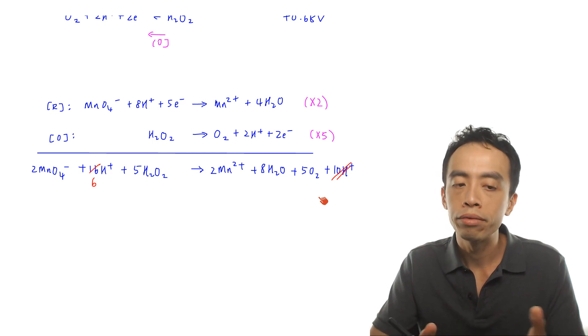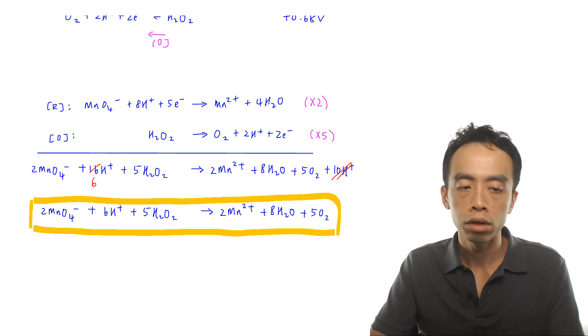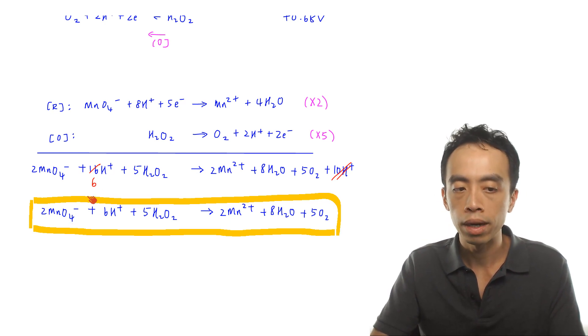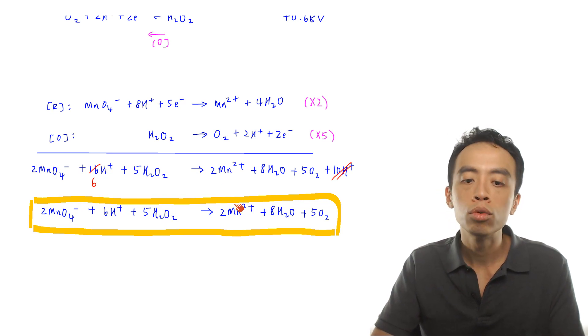The overall balanced equation for this redox reaction is: 2MnO4⁻ + 6H⁺ + 5H₂O₂ → 2Mn²⁺ + 8H₂O + 5O₂. That was the discussion on determining the feasibility of a redox reaction using standard electropotentials in the data booklet. If you learned something useful, please give a thumbs up, like this video, and subscribe to the YouTube channel for more weekly video lessons.